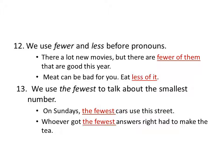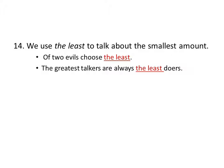We use the fewest to talk about the smallest number. For example: 'On Sundays, the fewest cars use the street.' 'Whoever got the fewest answers right had to make the tea.' We use the least to talk about the smallest amount. For example: 'Of two evils, choose the least.' 'The greatest talkers are always the least doers.'